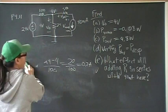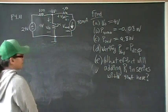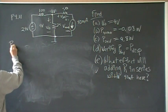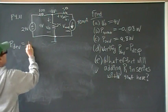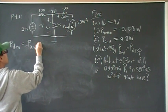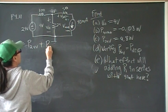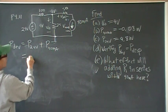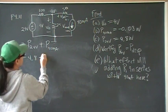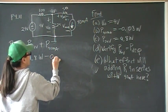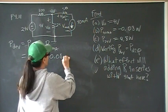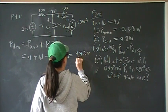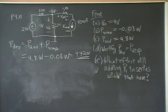Now, for part D, verify that power developed is equal to the power dissipated. Our power developed is going to be the power of the 24 volts plus our power of the current, the 40 million volts. And that's 4.8 watts minus 0.08 watts, which is 4.72 watts. That's our power developed.